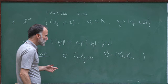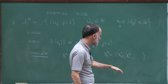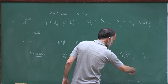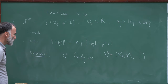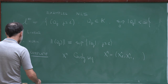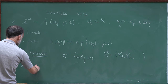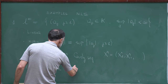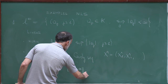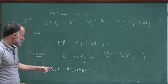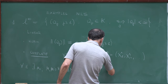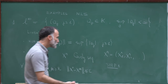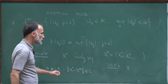So xn is a Cauchy sequence, meaning that for any epsilon, there exists n₀ such that if n and m are larger than n₀, the norm of xn minus xm is bounded by epsilon. I want to prove that this Cauchy sequence converges. This will be done in two steps: in step one, I find a candidate x which will be the limit, and in step two, I prove that xn converges to x.